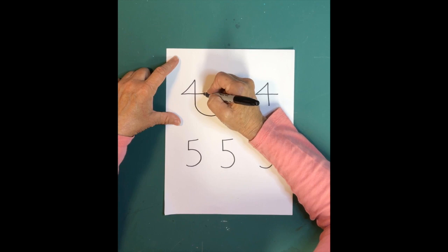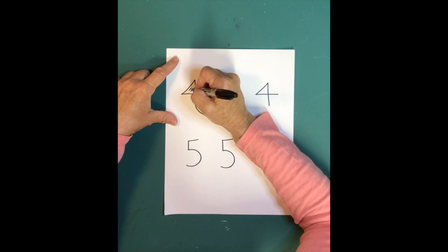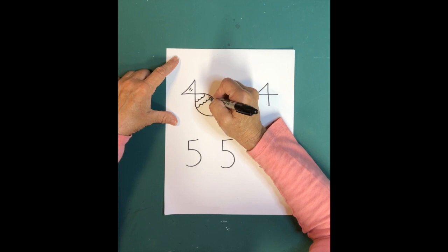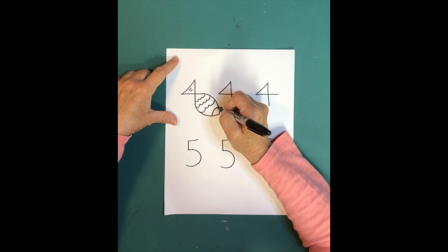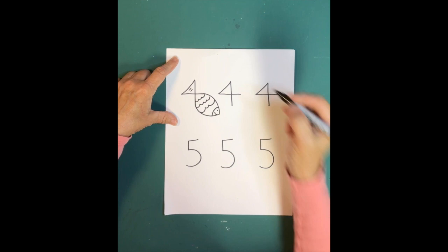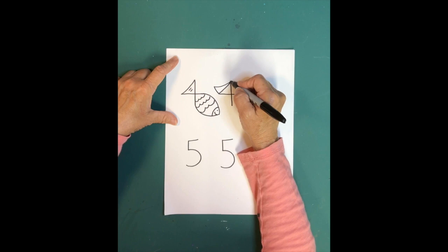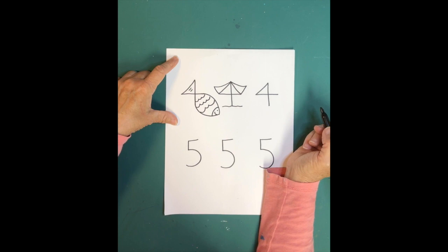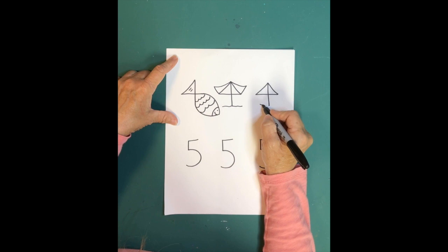The number four — you can do all kinds of fun things with a four. The first one is going to be a fish, and we'll do some little scales which will be fun to color, his little face and an eye and a happy face. The next four is going to be an umbrella at the beach, and then the next four is going to be a sailboat.